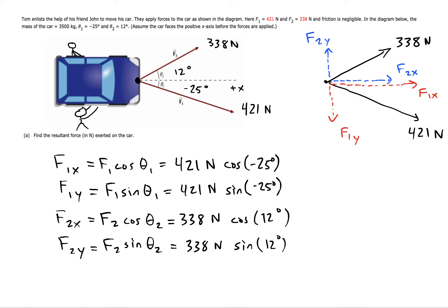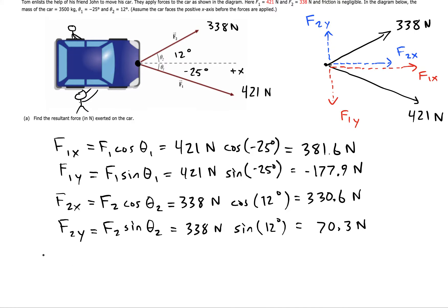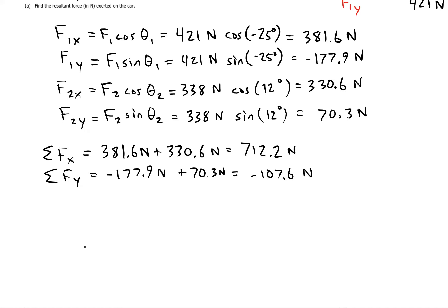Next you'd want to sum the X's and the Y's. So the sum of Fx will be 381.6 plus 330.6, which is 712.2. And then for your sum of the forces in the Y direction, you'd have negative 177.9 plus 70.3, which makes negative 107.6.